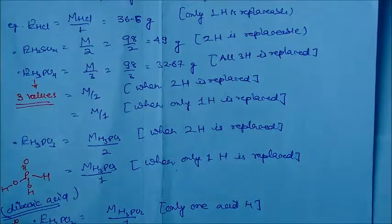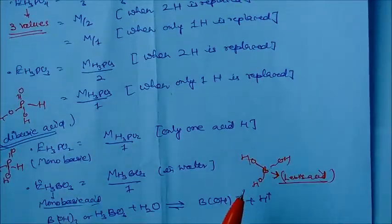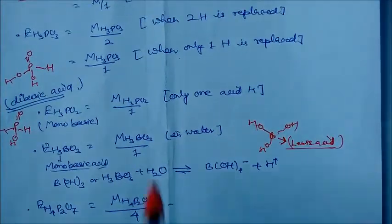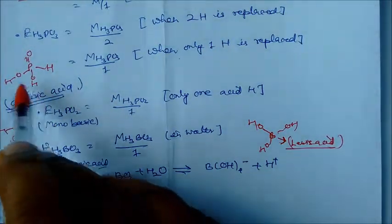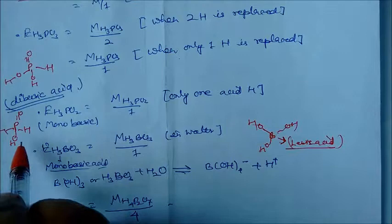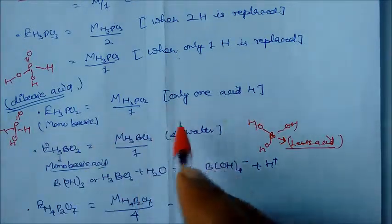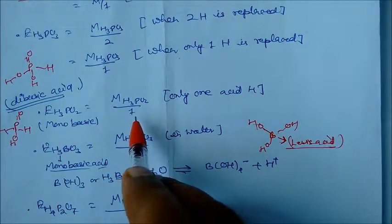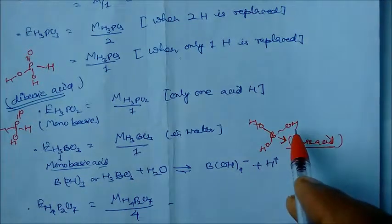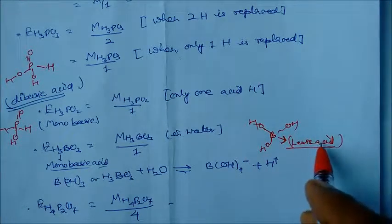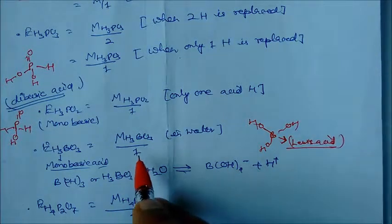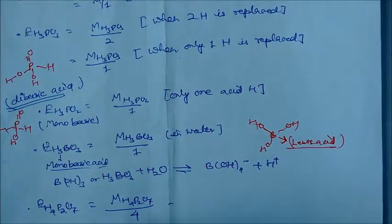For H3PO3: only 2 hydrogens can be replaced, as one hydrogen is directly linked to phosphorus and will not replace, so it has only 1 acidic hydrogen — equivalent mass = molar mass/1. For boric acid (H3BO3): although it has 3 OH groups, all hydrogens will not replace because it is a Lewis acid — it reacts with water and can only replace 1 hydrogen, so equivalent mass = M/1. For H4P2O7: equivalent mass corresponds to M/4.